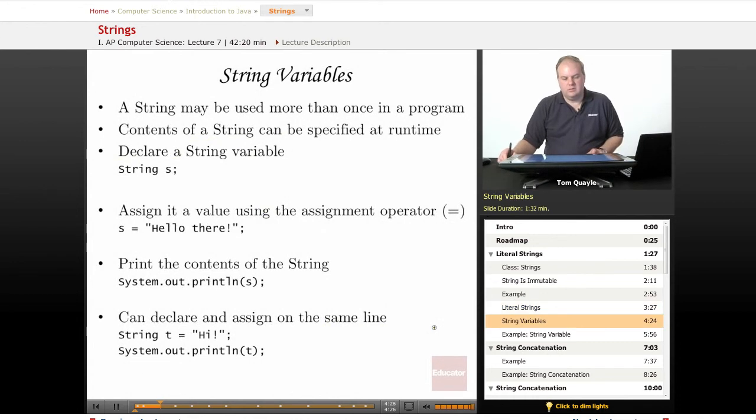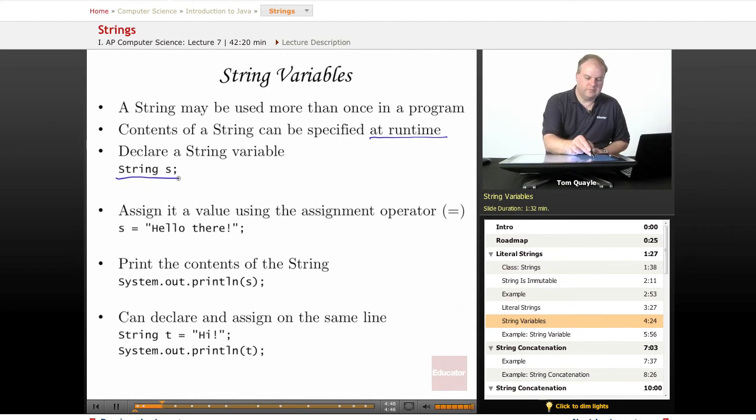With string variables, a string can be used more than once in a program. The contents of a string can be specified at runtime, which means you don't have to type it in while you're typing your program. Runtime means while your program is running, the contents can be specified. So the way you do this is you declare a string variable. You declare an object of type string and you give it a name. In this case, I'm just calling it s. And then you assign the string object a value using the assignment operator, which is the single equal sign. So I do that here. And I say s equals hello there.